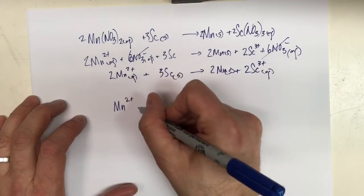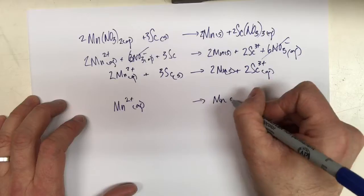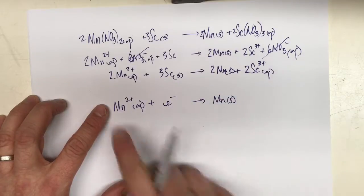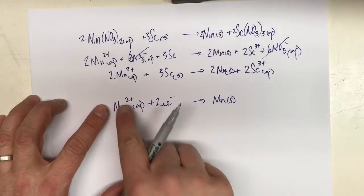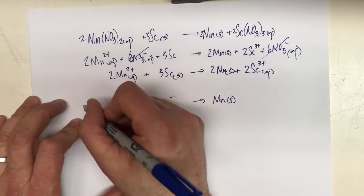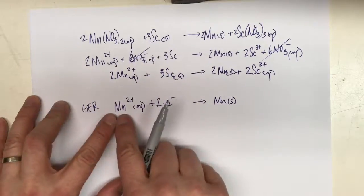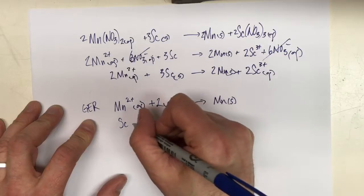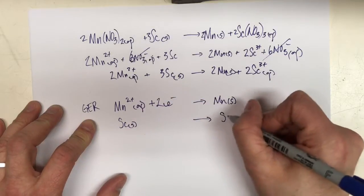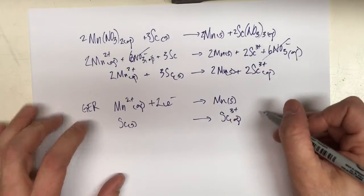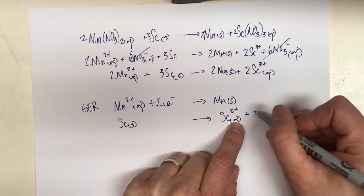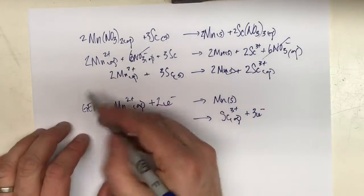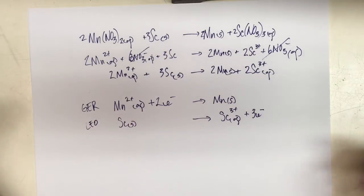For the manganese half reaction: Mn²⁺ ions become manganese solid. Since this side is two positive and that side is zero, I add electrons to the more positive side. Putting two electrons in gives two positive and two negative equals zero — they're balanced. Since the electrons are in the reactants, Mn²⁺ is gaining electrons and is reduced. For scandium: Sc solid becomes Sc³⁺ aqueous. This side is more positive, so I add three electrons there — zero and three positive minus three negative equals zero. This is losing electrons, so scandium is oxidized and manganese two is reduced.